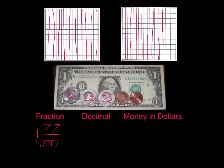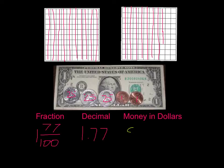Our decimal: we write a one for our dollar. We have seventy-seven hundredths, so the last digit goes in the hundredths place and the next digit goes in the tenths place — both happen to be sevens — giving us one point seven seven. Our money amount is dollar sign one point seven seven for seventy-seven cents. And that's how we relate fractions to decimals to money. Thank you.